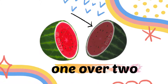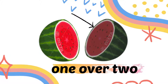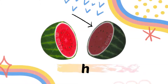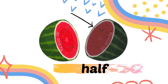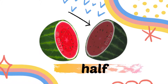The fraction — we're going to say 1 over 2. For 1 over 2, it has another name which is called 'half'. 1 over 2 is also called half.